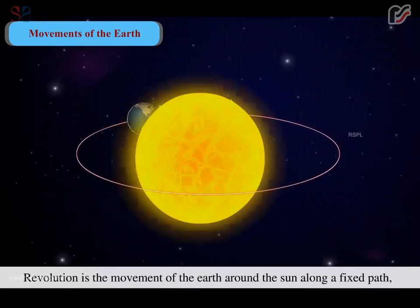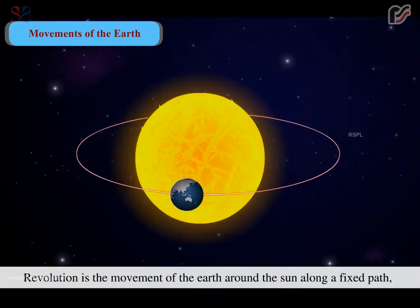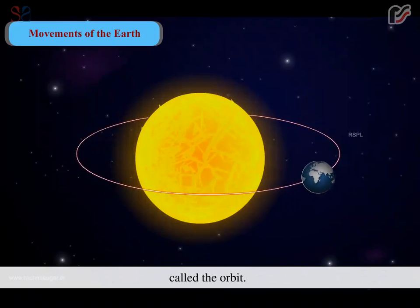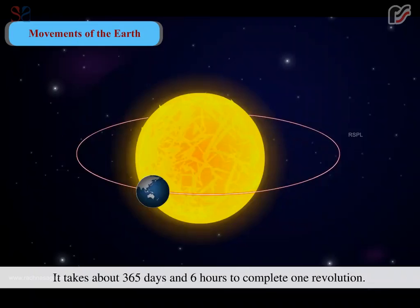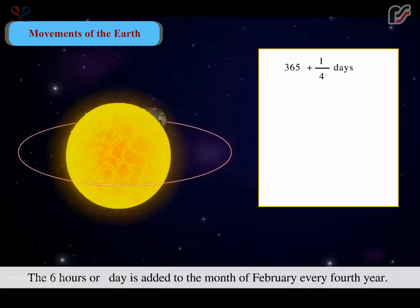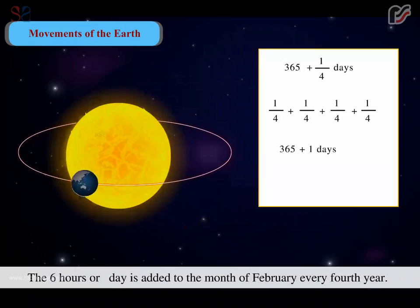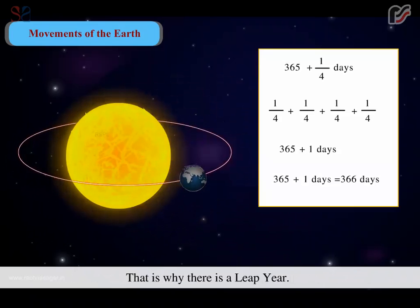Revolution is the movement of the earth around the sun along a fixed path called the orbit. It takes about 365 days and 6 hours to complete one revolution. The 6 hours, or one-quarter day, is added to the month of February every 4th year. That is why there is a leap year.